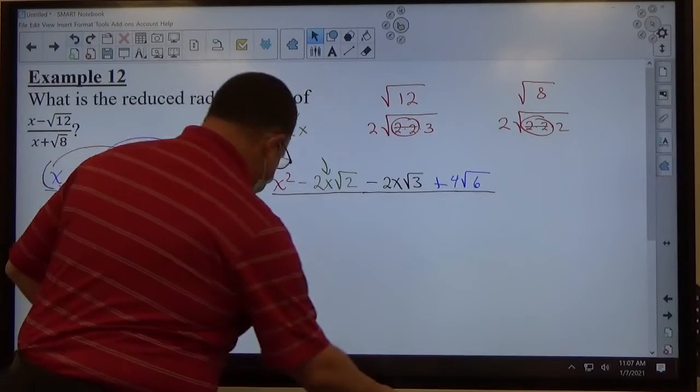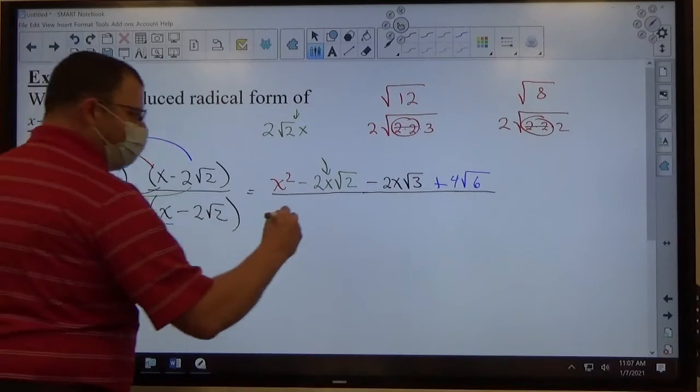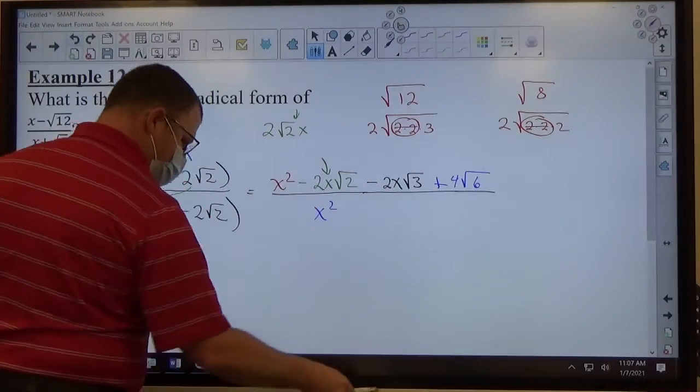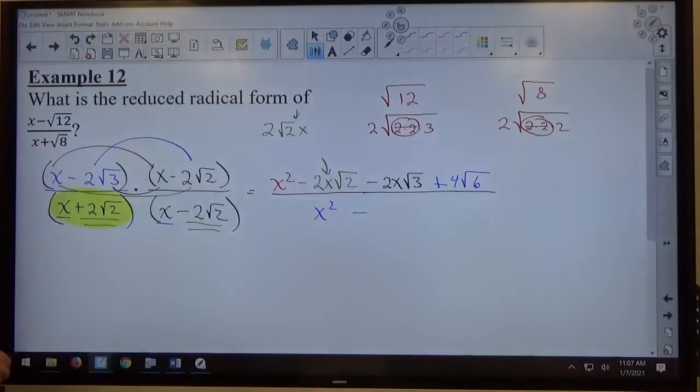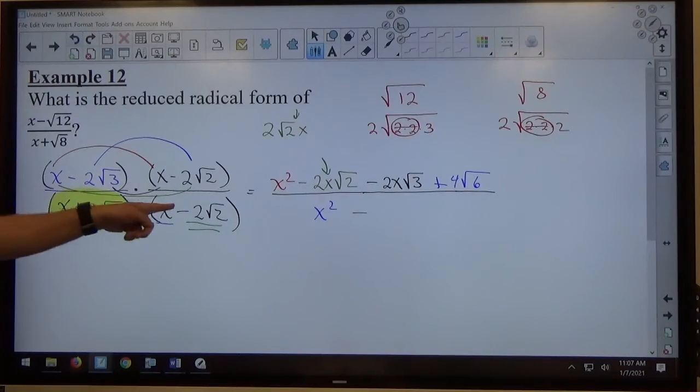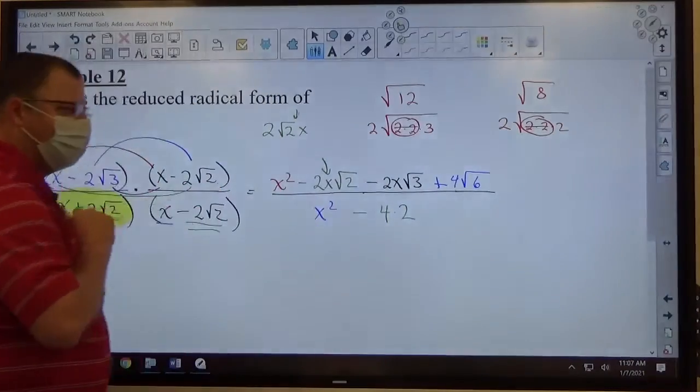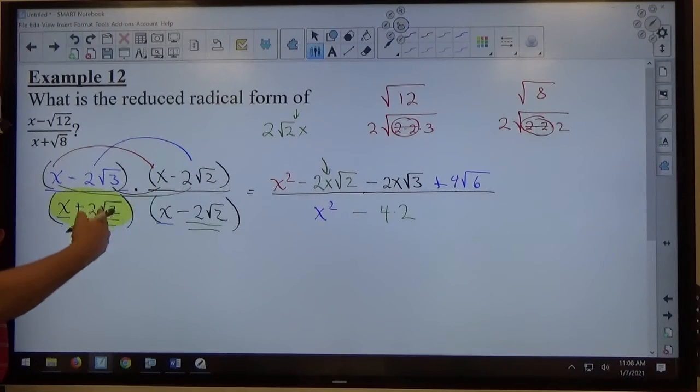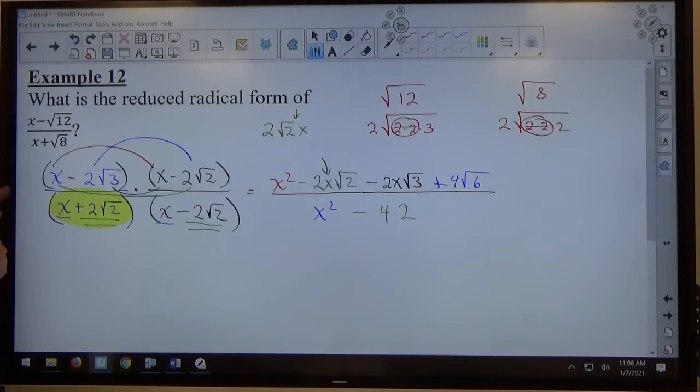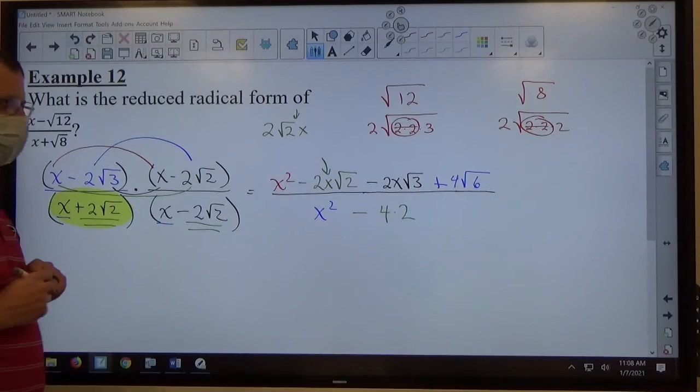On the bottom, we just have to do fl on this one. So first times first, x times x makes x squared. And last times last, positive times negative makes negative. And I have 2 times 2 is 4. Square root of 2 times square root of 2 is 2. So be careful when you have these number times the square root of a number when you're multiplying them together. The outside number is multiplied to make the outside number, the inside is multiplied to make the inside. Square root of 2 times itself makes 2. What's 4 times 2? 8.